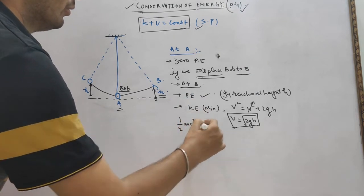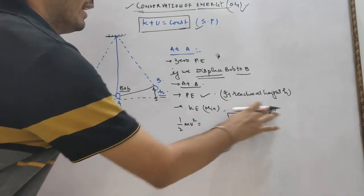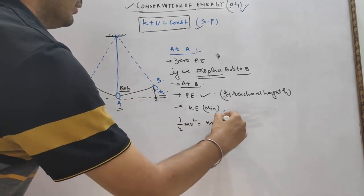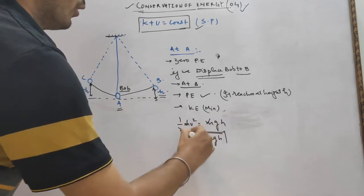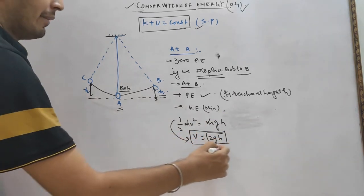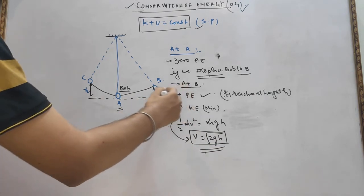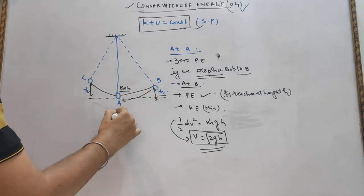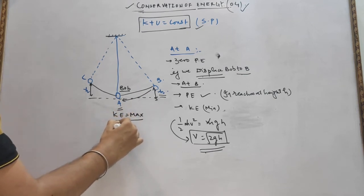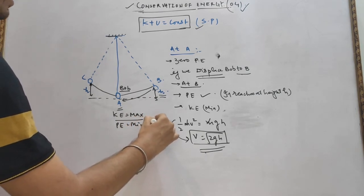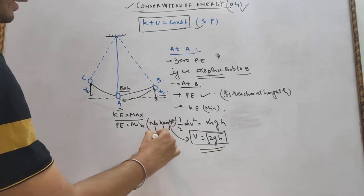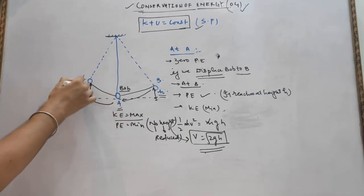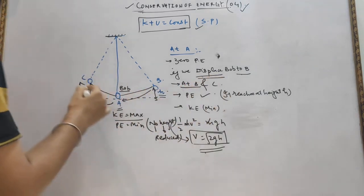At point B, kinetic energy is converted into potential energy mgh. When the bob swings back and reaches point A, kinetic energy will be maximum and potential energy will be minimum because height is reduced to zero. Due to this kinetic energy, the bob swings to point C on the other side, reaching a certain height, where potential energy is maximum and kinetic energy is minimum.